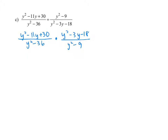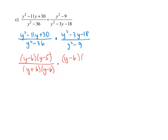The first numerator factors into y minus 6 and y minus 5. The denominator is a difference of squares, so it factors as y plus 6 and y minus 6. The numerator of the second rational expression factors into y minus 6 and y plus 3, and the denominator factors into y plus 3 and y minus 3. We can see common factors: y minus 6 in the numerator divides out with y minus 6 in the denominator, and y plus 3 in the numerator divides out with y plus 3 in the denominator.